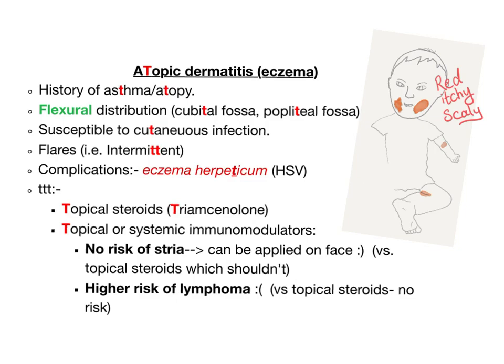If you use topical immunomodulators, there is no risk of striae, so you can use them on the face. However, with topical or systemic immunomodulators — especially systemic ones — there is a higher risk of lymphoma. Topical steroids have no risk of lymphoma.